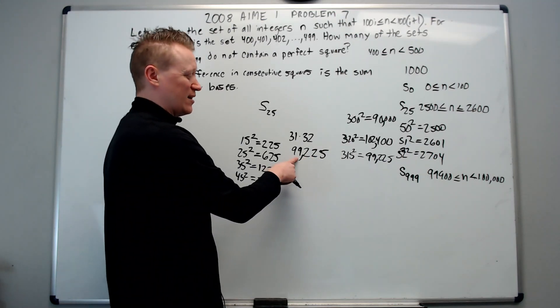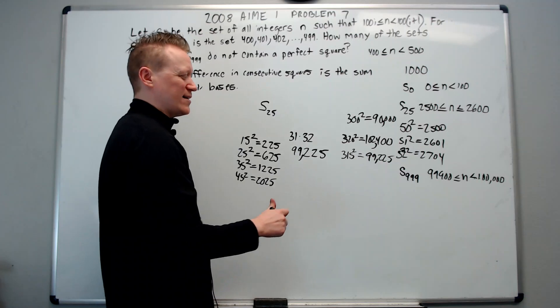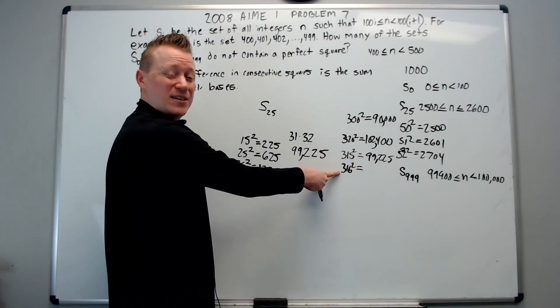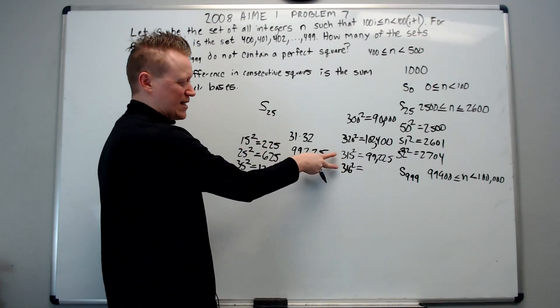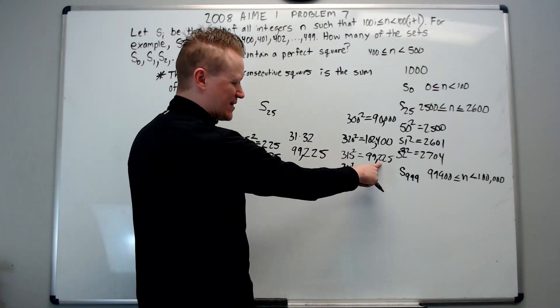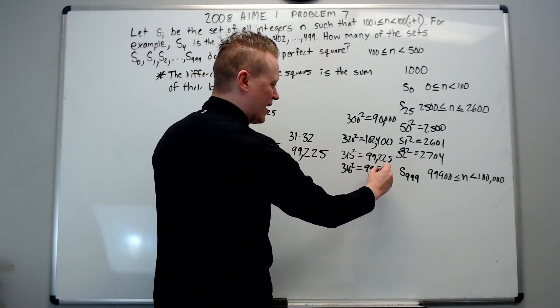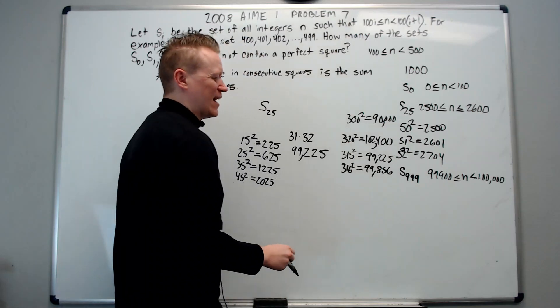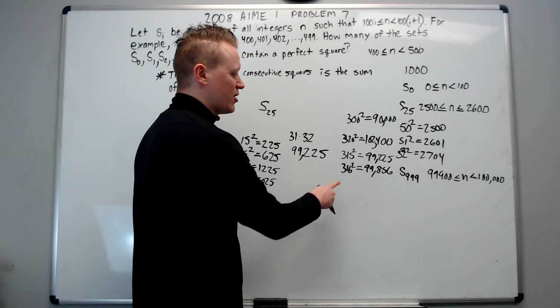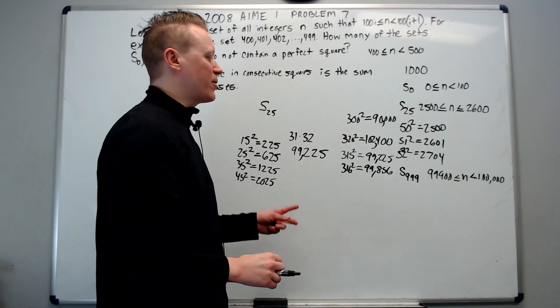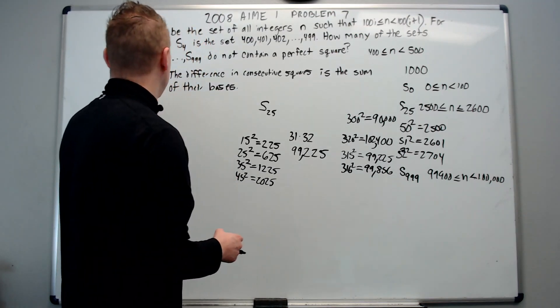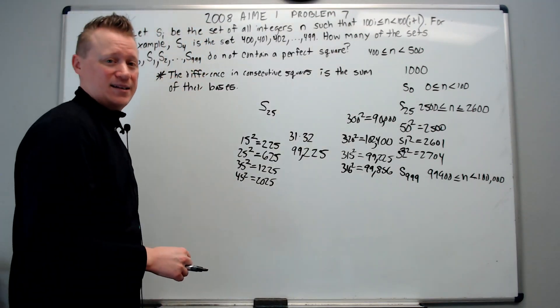That gets us a lot closer to the end, but we're still not quite there yet. Let's go one higher, and we don't have to calculate it, because we can use this trick again. We just add these together to get 631, and if I add 631 to this, it will be 99,856. And obviously, if I do 317 squared, we're going to go over where we want to be at. So there are 316 perfect squares altogether in all of the sets of S that we want from 0 to 999.